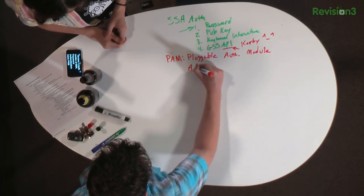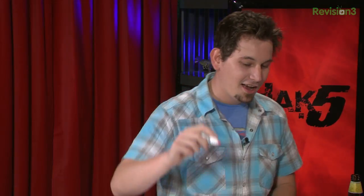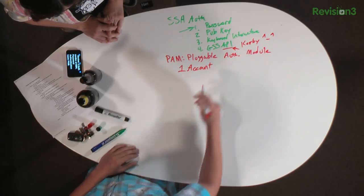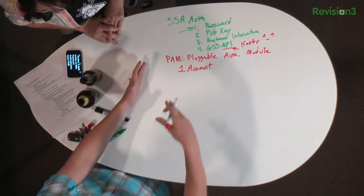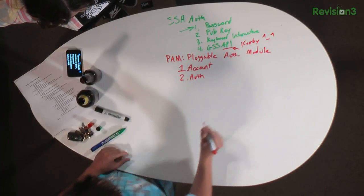There are four modules that go into PAM. The first module is account — this checks who you are and whether you're allowed to access the system. The second part is the authentication module, which verifies the identity of that account, typically using a password — it asks for your password and checks whether it matches what's on file.